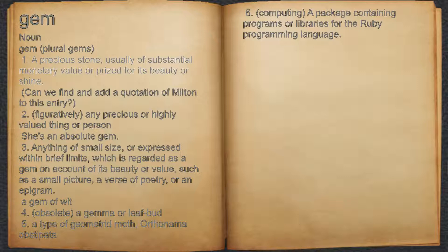Gem. Noun. 1. A precious stone, usually of substantial monetary value or prized for its beauty or shine. For example, can we find and add a quotation of Milton to this entry?